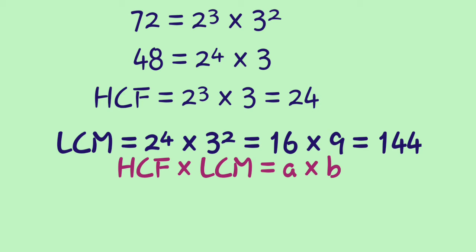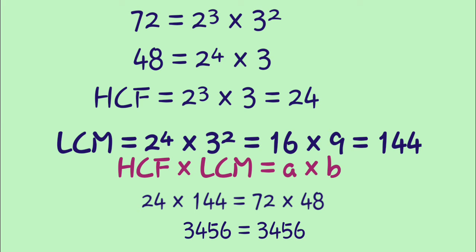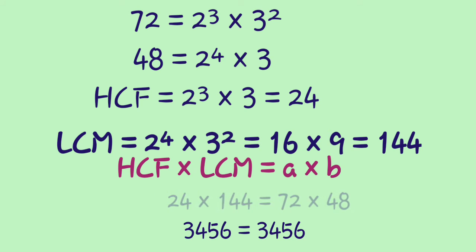We also have an important relationship between HCF, LCM, and the numbers: HCF × LCM = A × B. In this case, HCF is 24 and LCM is 144. Therefore 24 × 144 = 72 × 48, that is 3456 = 3456.